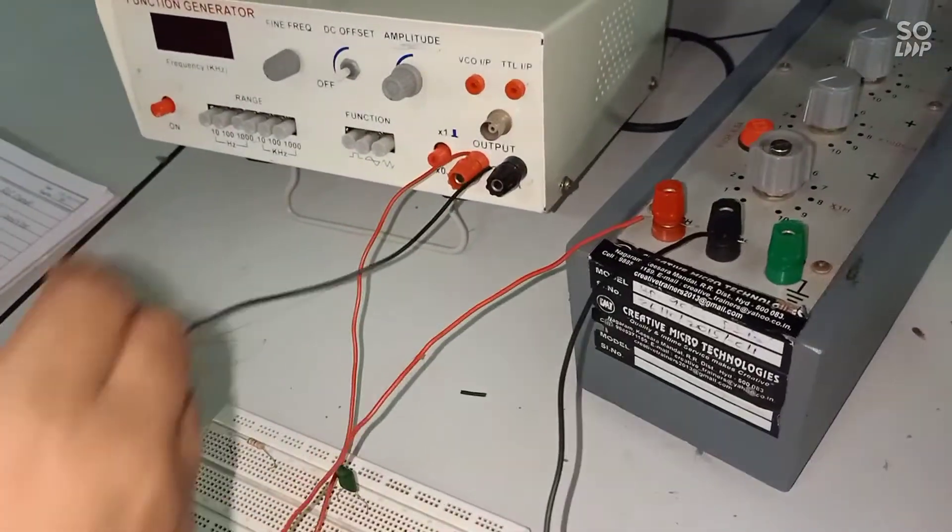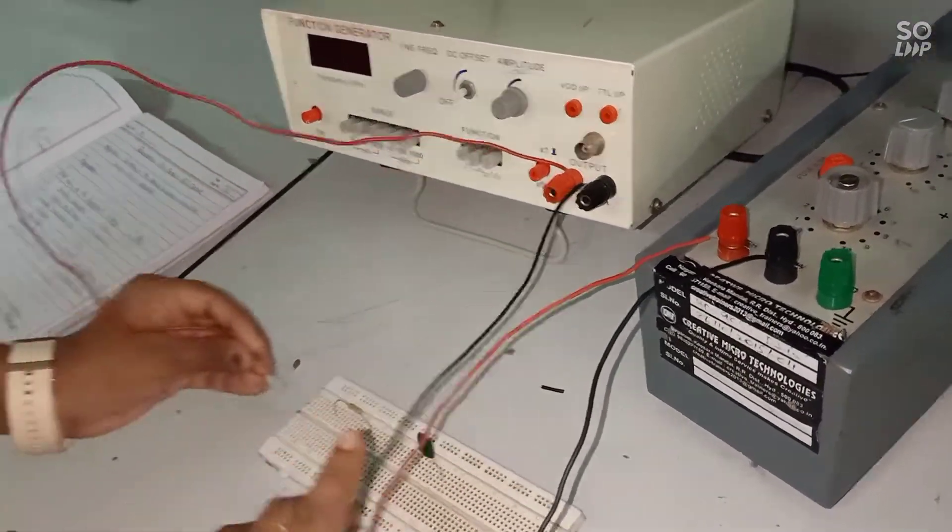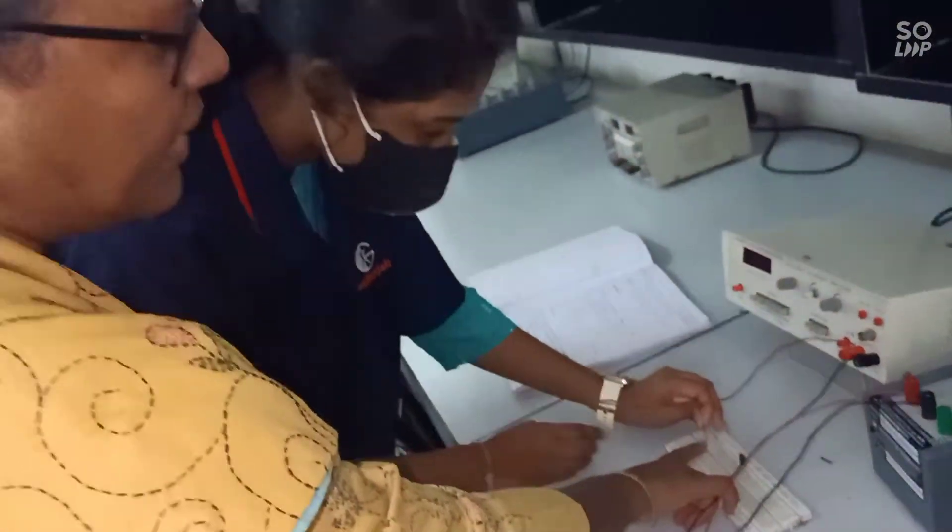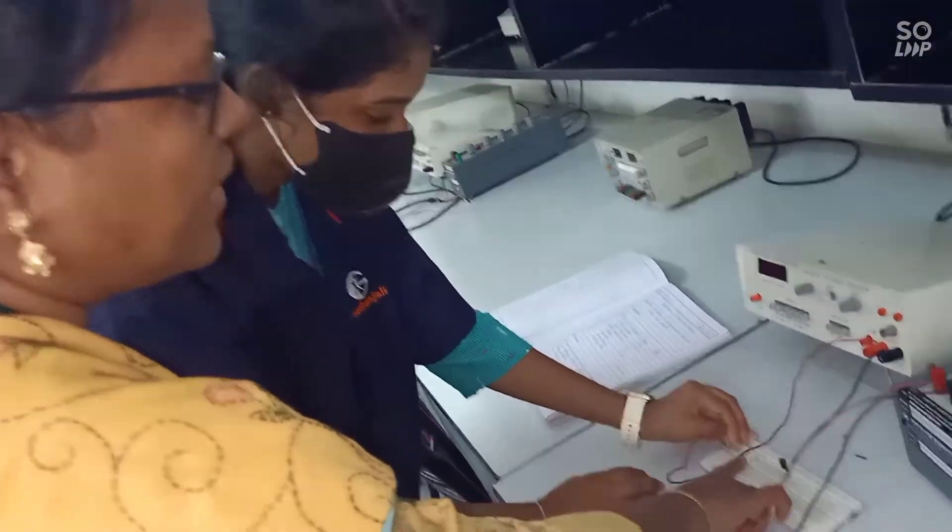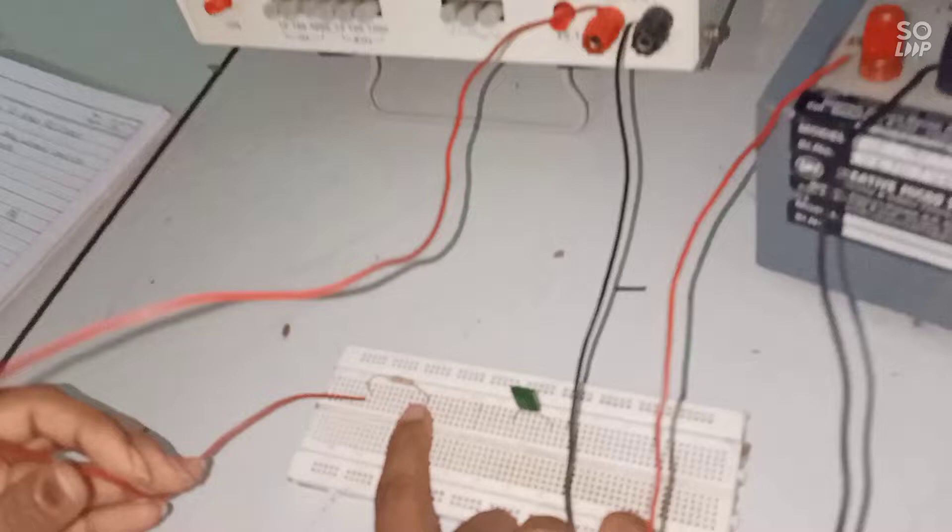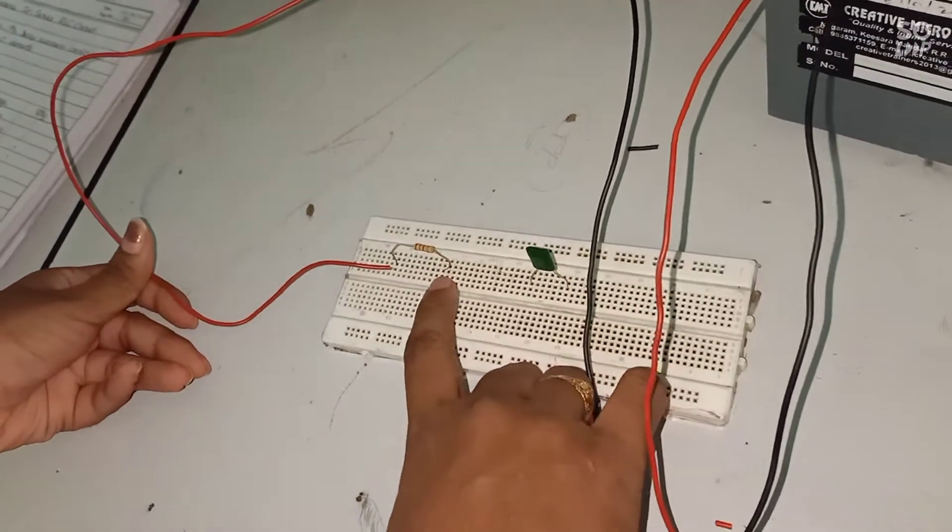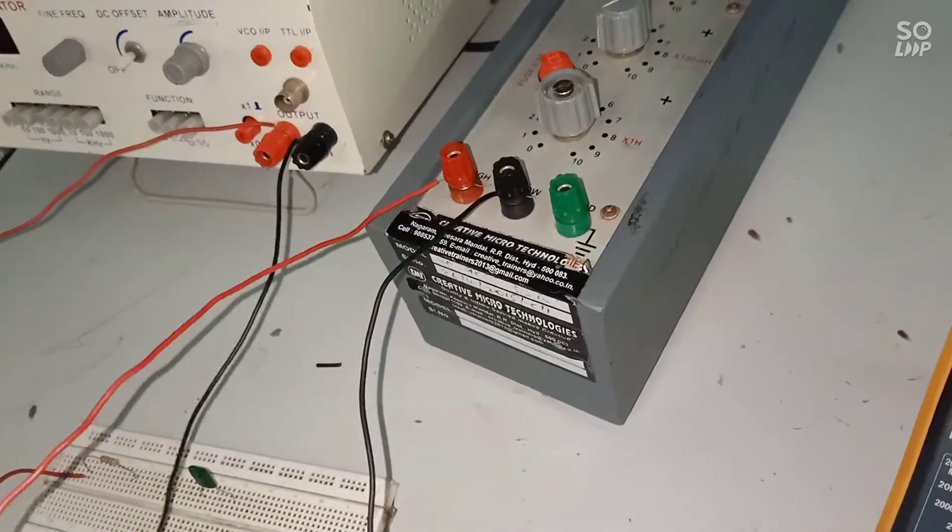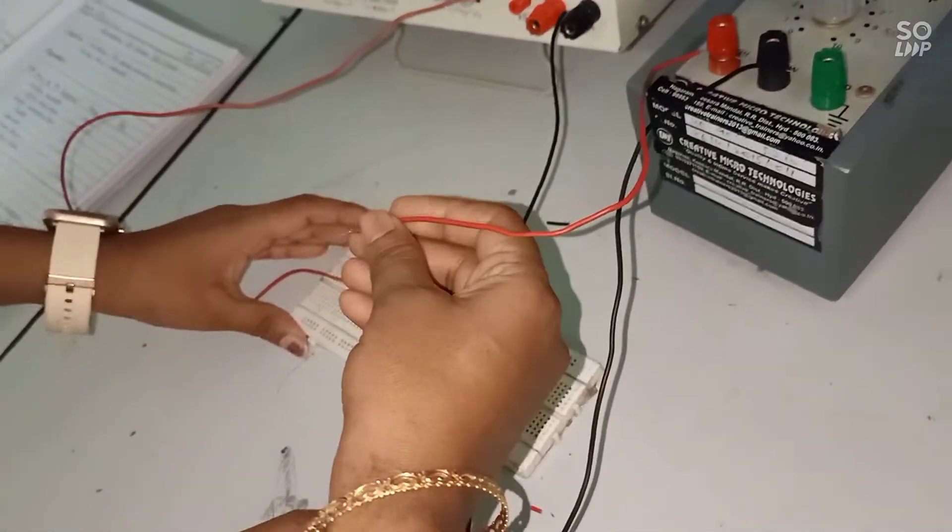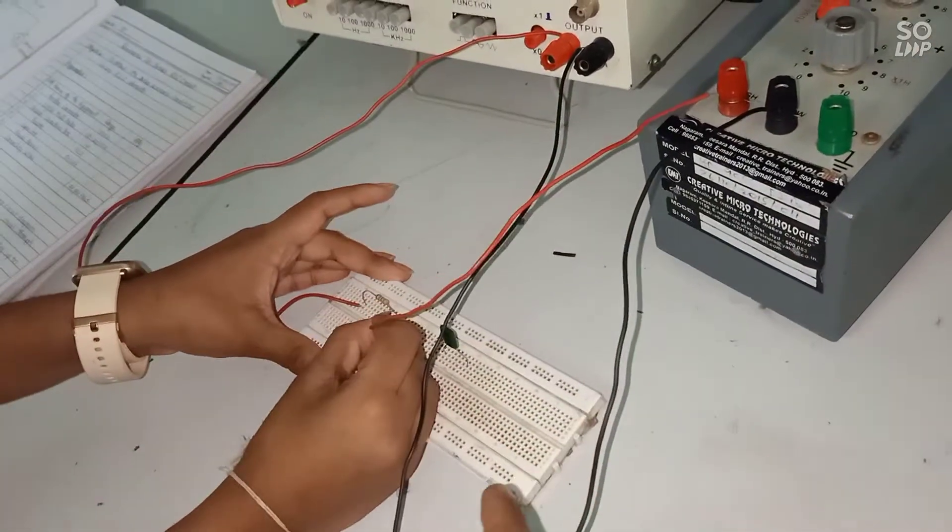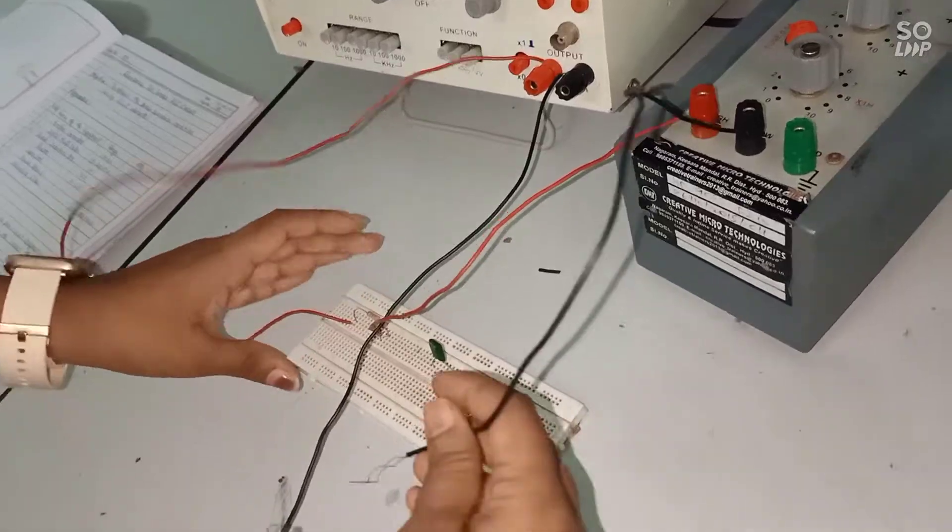Coming to the connections, from positive supply of the function generator it is connected to the start of the resistance. Resistor used here is 1k ohm resistor. Then to the end of the resistor, this inductor is connected. The inductor used is 1 Henry inductor.